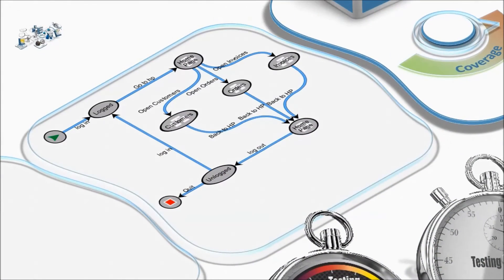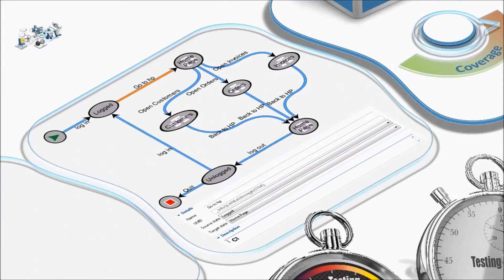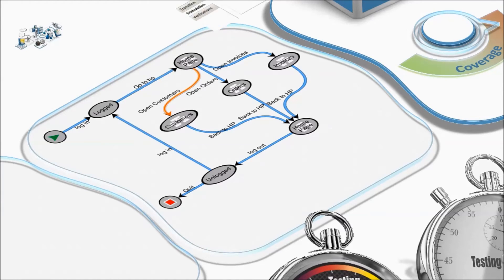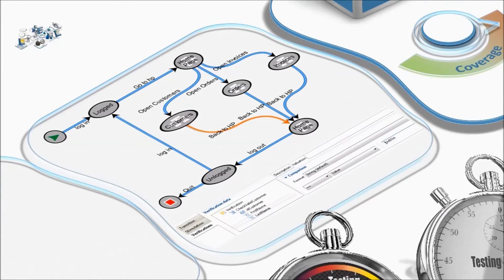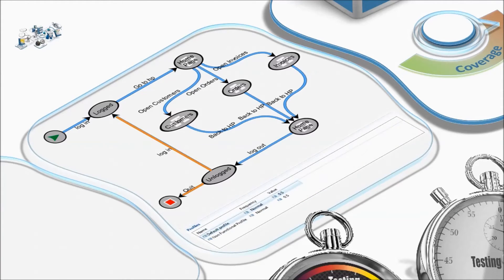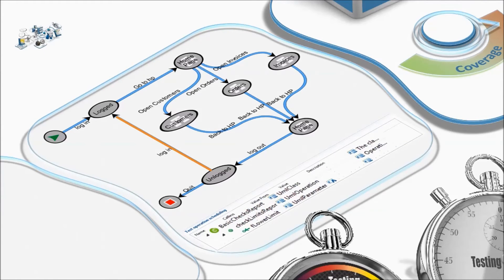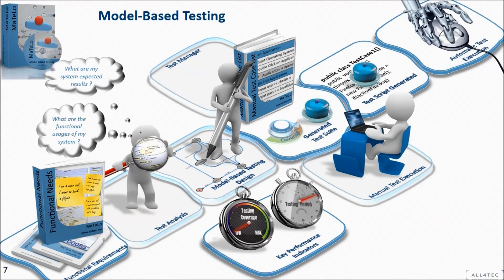In each transition, data can be stored with a simple drag-and-drop: traceability requirements, textual descriptions useful to configure a manual test step, stimulation input data, verification data output, treatment functions to calculate automatically an expected result, risk probability usages, and keyword functions for automation.